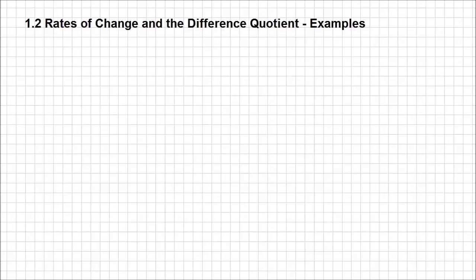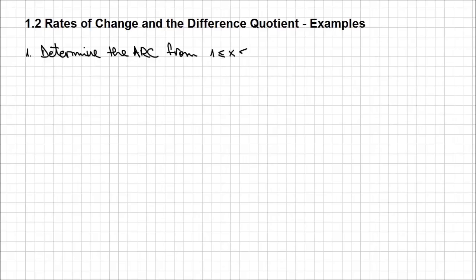We now have an algebraic way to determine the average and the instantaneous rate of change for a function. So let's see how this works on an example. The first problem is asking us to determine the average rate of change from 1 to 3, so it's an interval, for the following functions.